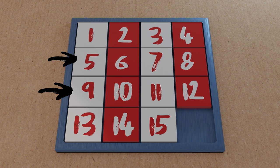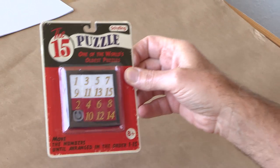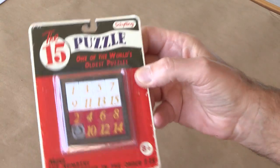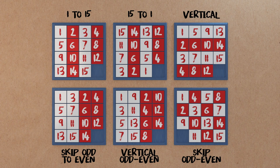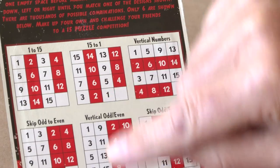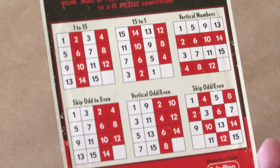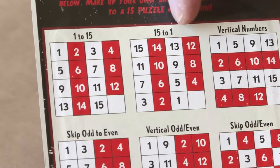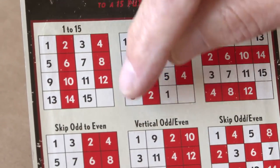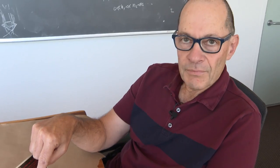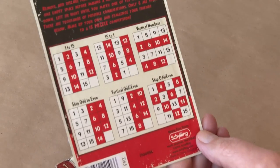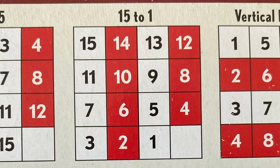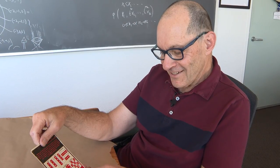What we want to talk about is the mathematics behind this puzzle. We went out and found some examples in stores and found something interesting on the back of the package: it shows patterns you might try to arrange the tiles in. One was 1 through 15 in order, another had numbers in vertical lines, another had evens and odds, and one went from 15 down to 1 in reverse order. But very curiously, one of those arrangements — try as you might — you will never be able to achieve. How it ended up on the back of the package is a real mystery, and that's what we want to explain today.